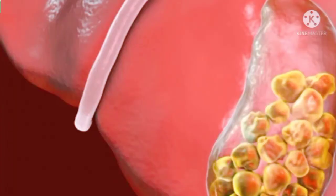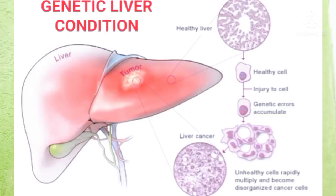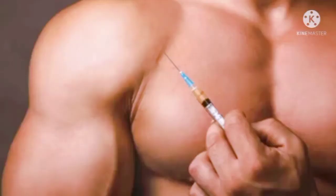Number one: liver and gallbladder problems. Number two: drinking too much alcohol. Number three: genetic liver conditions. Number four: use of metabolic conditions.